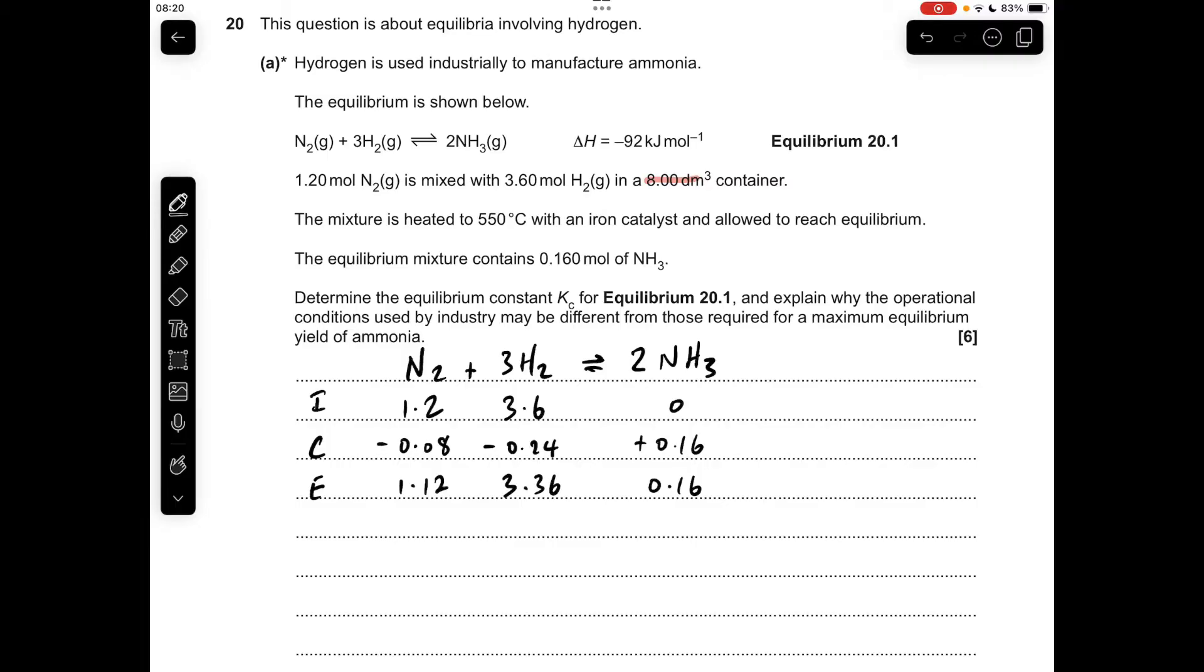I've highlighted the volume of the container, 8 decimeters cubed, because we don't use equilibrium moles in the KC expression, we use equilibrium concentrations. We need to divide all these moles by 8. Moles over volume gives concentration, so the equilibrium concentration of nitrogen is 0.14, 0.42 for hydrogen, and 0.02 for ammonia.